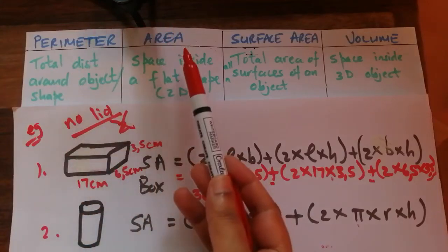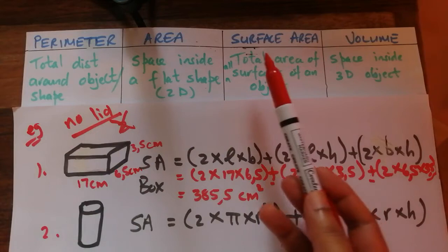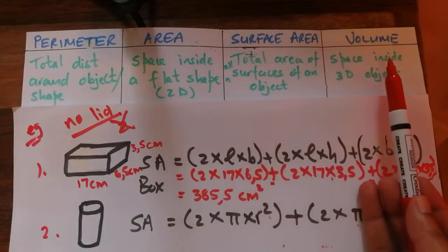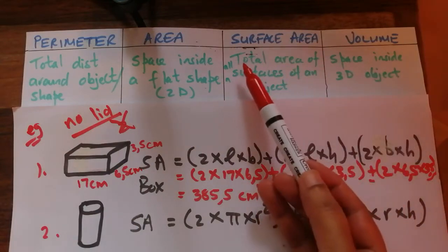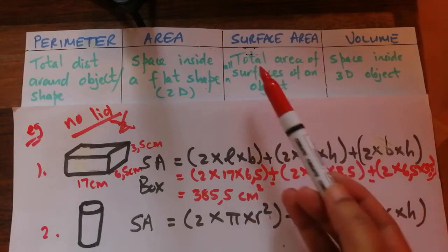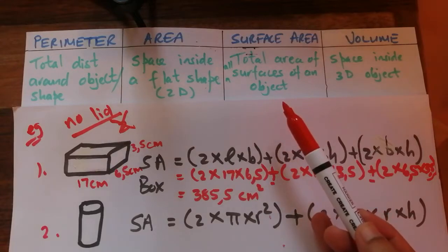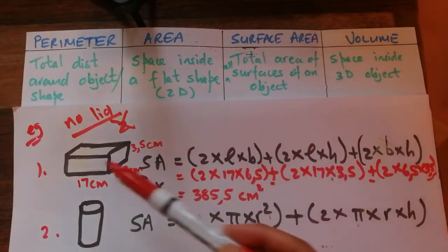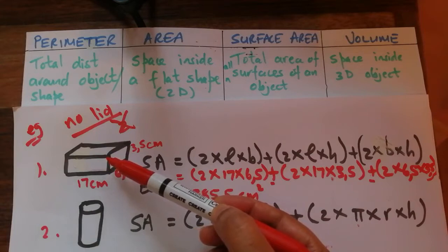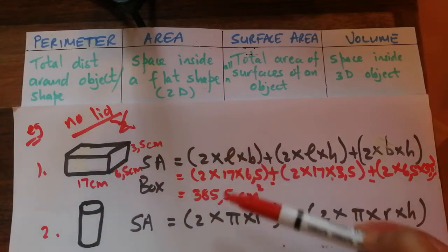Today's video is on perimeter, area, surface area and volume — part two. Our focus will be on surface area and volume. The two objects we will be tested on are the rectangular prism (the box) and the cylinder.